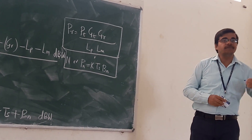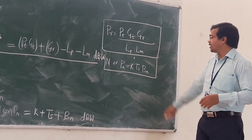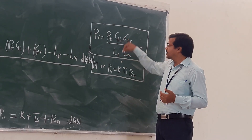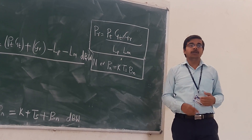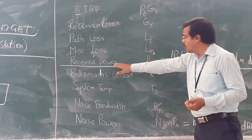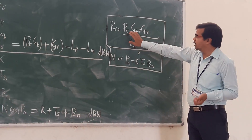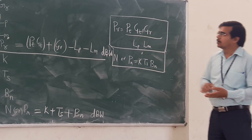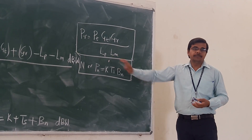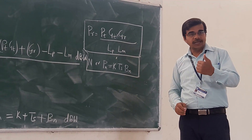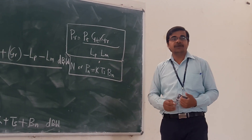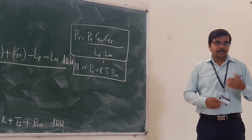These two formulas are first expressed in linear terms, but whenever we make the budget, we convert them into dB. When converting to dB, multiplied terms get added and divided terms get subtracted, which makes calculation easier. For received power, the parameters are: transmitted power, transmitting antenna gain, receiving antenna gain, path loss, and miscellaneous loss.